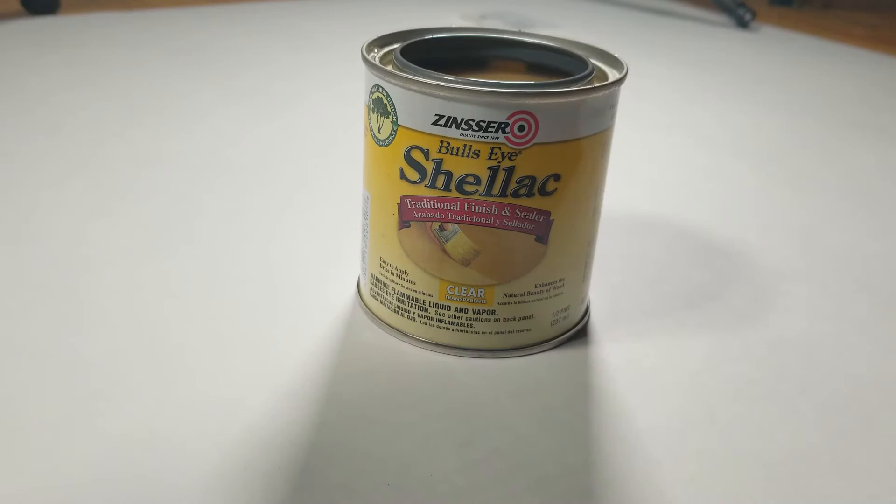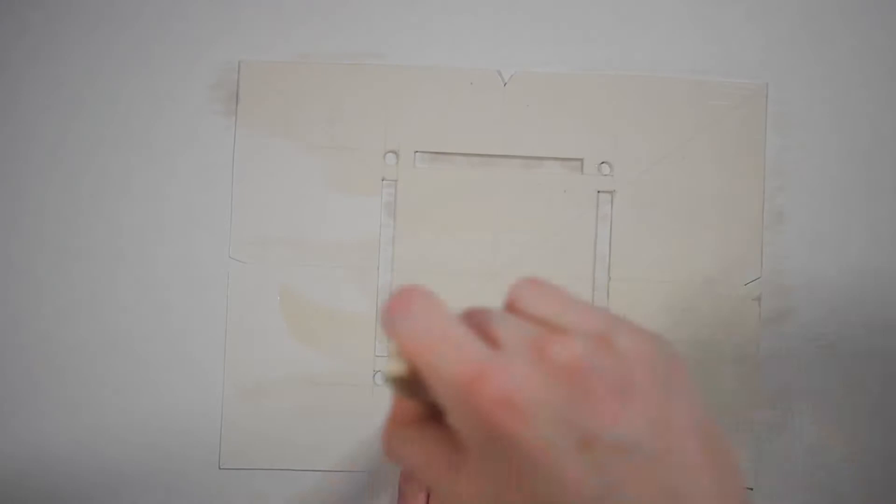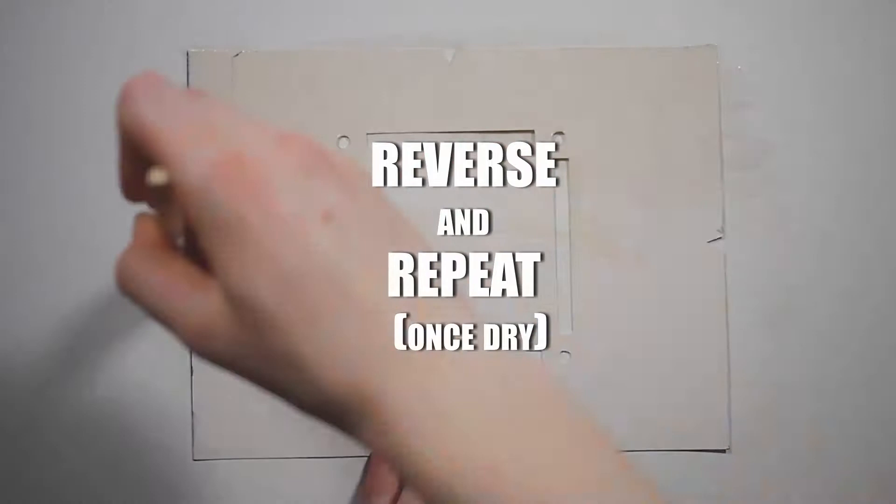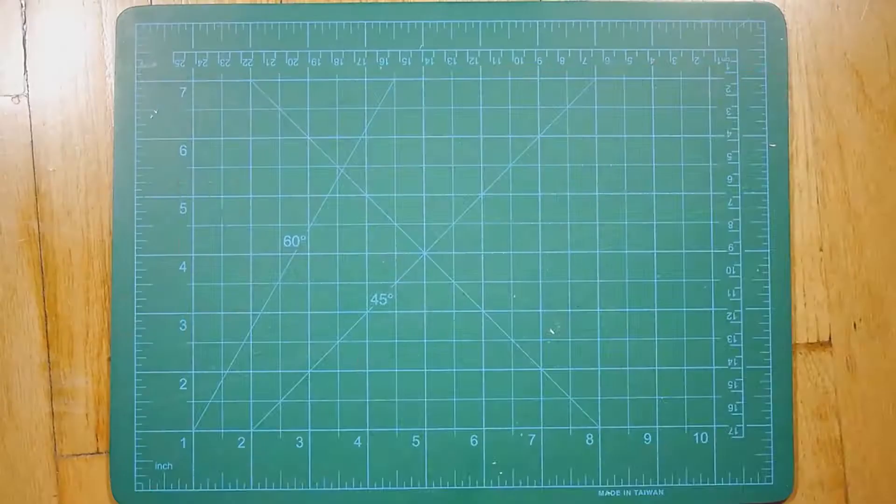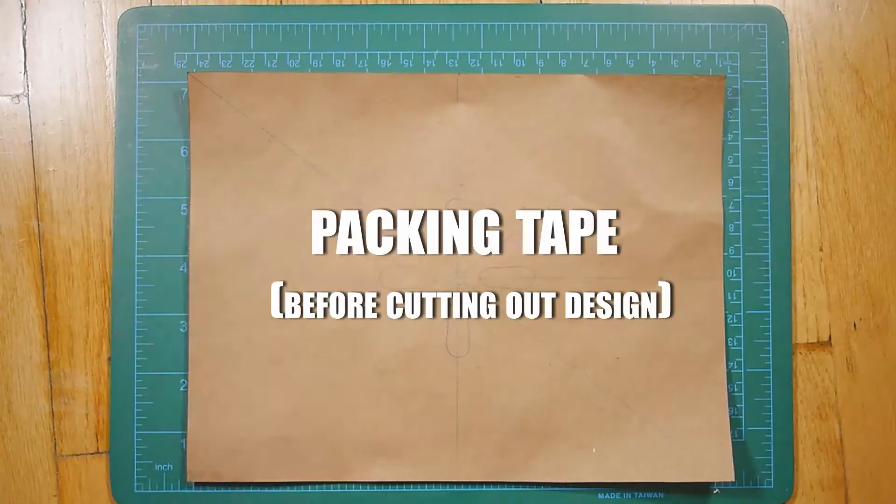When you're making a stencil from any sort of paper, it's really important to make it last as long as possible. One way to do that is to shellac your paper, and this could be on the cardstock or even on the craft paper. These paper stencils will not last long, but they'll last longer because the shellac provides a sort of waterproofing that will help it be a little bit more durable.